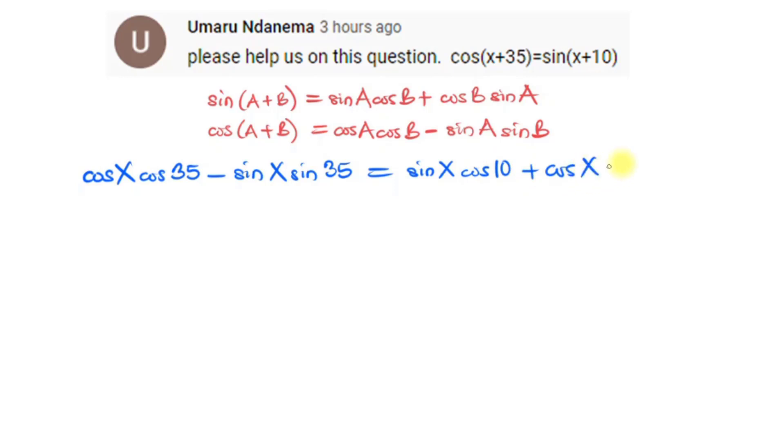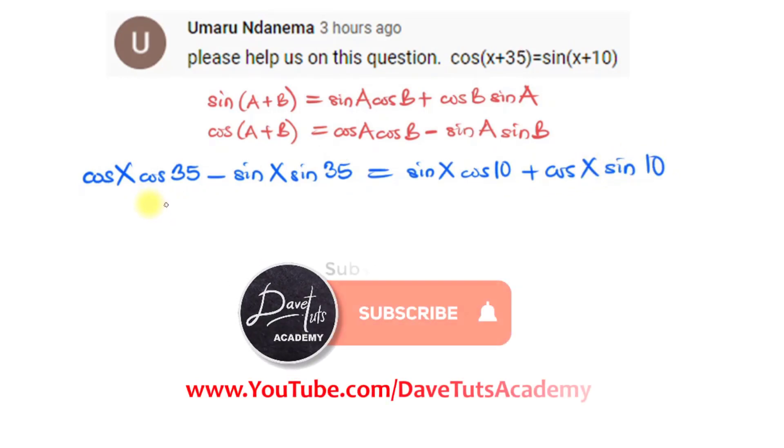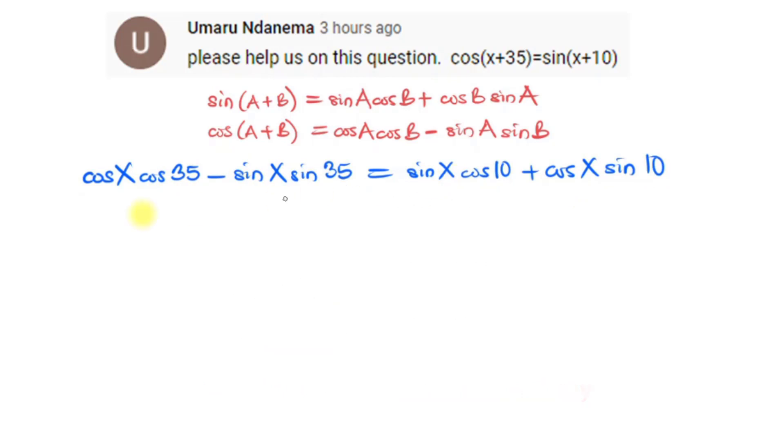So now I can say I want to collect like terms. Like I'm seeing cos(x) here and I'm also seeing cos(x) here. I'm seeing sin(x) here and I'm also seeing sin(x) here. So if I have to do that I can just have cos(x)cos(35), and when I subtract cos(x)sin(10) from both sides here it will become minus cos(x)sin(10).